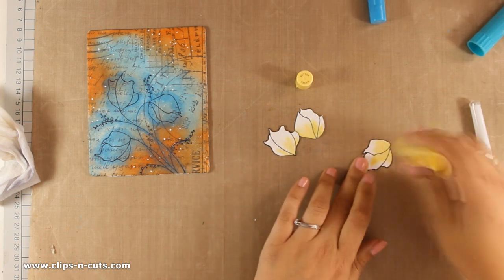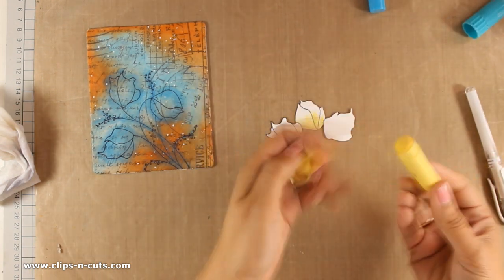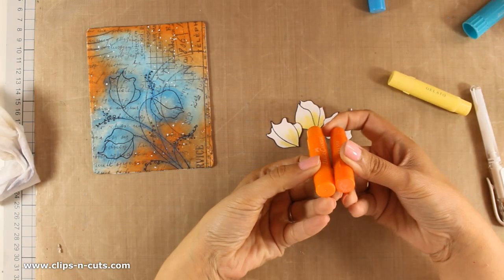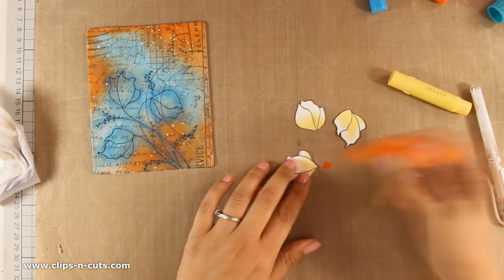Notice how I leave the tips of the petals white and I don't move the yellow color further away from the center of the petal. I am going to do the exact same technique with orange, but this time I am going to stay only at the bottom of each petal.